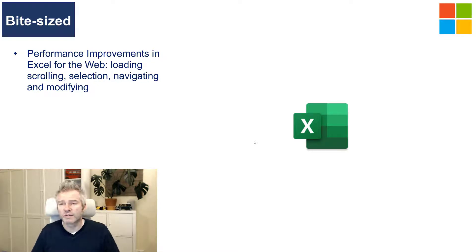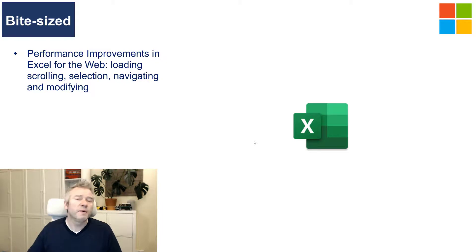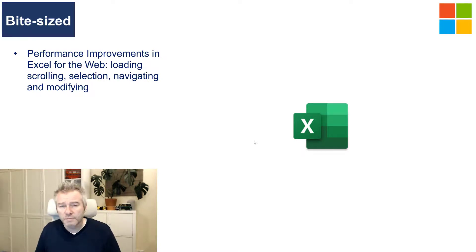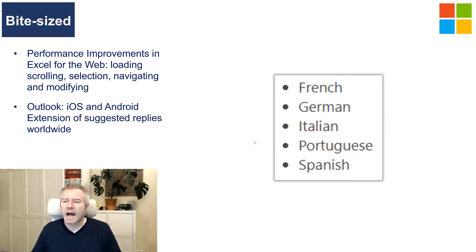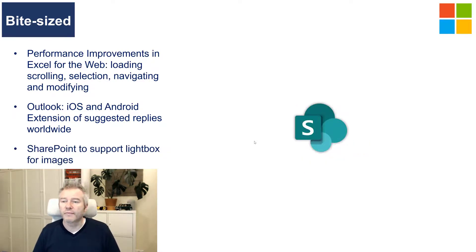Some bite-size improvements: Excel for the web has had improvements to loading, scrolling, selection, and navigation speed. The speaker notes they tend to open Excel in the desktop app out of habit, but may revisit now that the web version has improved. Also, Outlook on Android is getting suggested replies expanded to additional languages — you can swipe to select suggested replies from within the app.